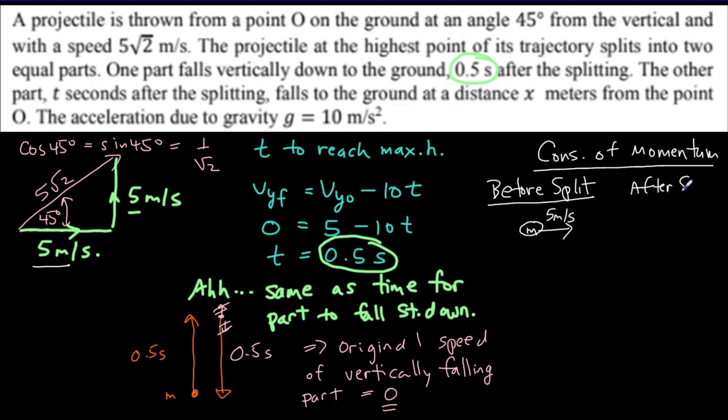Now, after the split, you now have two parts, each of mass m over 2, but this one has no speed. And the other part, also mass m over 2, it has to carry all the momentum of the system.